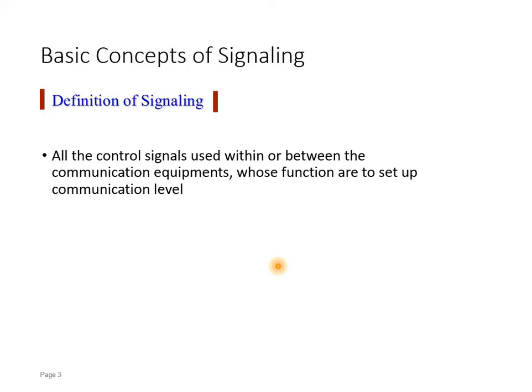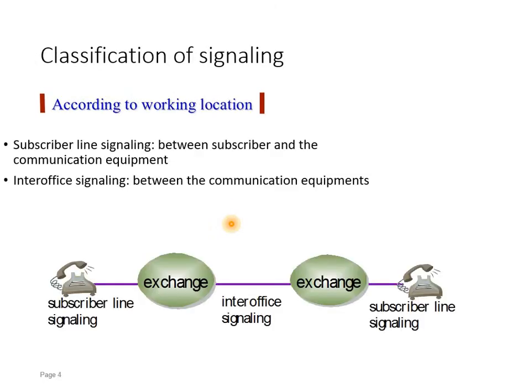Before we start, we should understand what signaling actually is. Signaling is basically all the control signals used within or between communication equipment whose functions are to set up the communication. Signaling can be between the user and the network, or between the network elements, or even within a network element. Signaling between the user and the network is called access level signaling, while signaling between network elements is broadly referred to as trunk signaling.